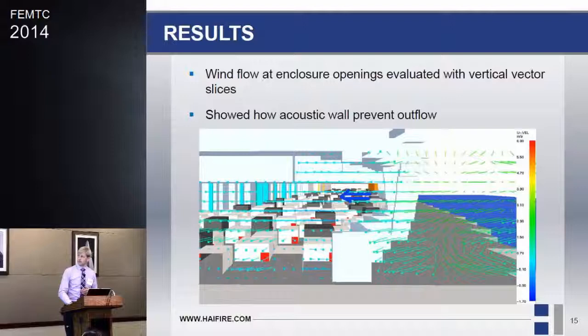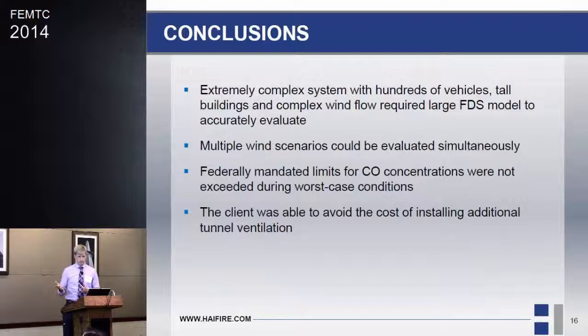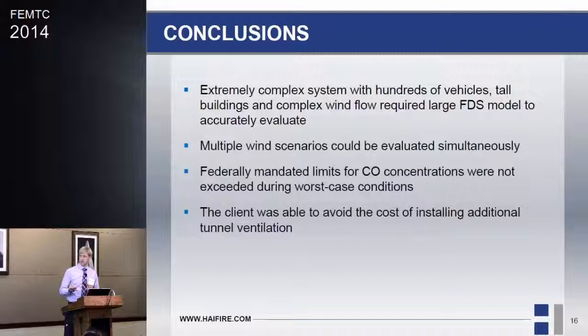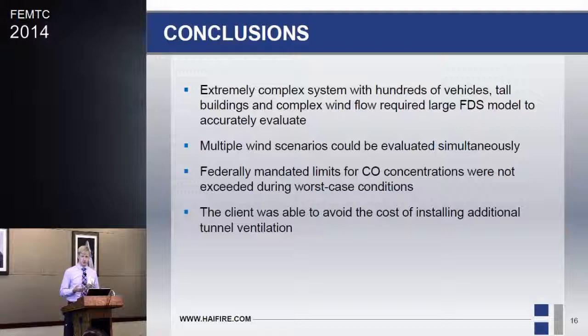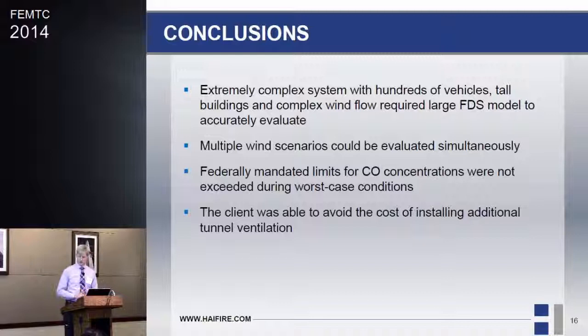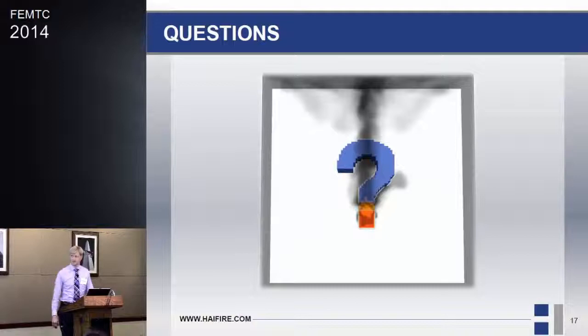In conclusion, this was a pre-complex system involving the interaction of vehicle exhaust, wind, and large buildings — especially the two tall buildings at each end of the roadway which disrupted the wind. We used a large FDS model and ran multiple wind scenarios simultaneously to identify the worst cases. The mandated CO concentration limits were not exceeded in any scenario, so the client could avoid the cost of installing additional mechanical ventilation.